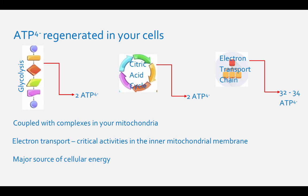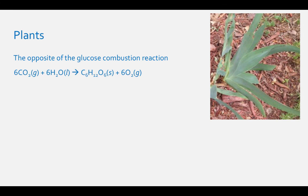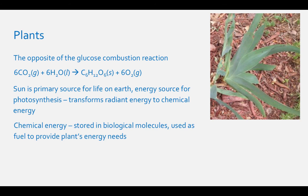Another example of coupled reactions is what happens in plants when they do the opposite of the glucose combustion reaction. They form glucose and oxygen from carbon dioxide and water. The primary source of energy for life on earth is the sun, which is the energy source for photosynthesis, the biological process that transforms radiant energy into chemical energy. Chemical energy is stored in biological molecules, which can then be used as fuel to provide an organism's energy needs.